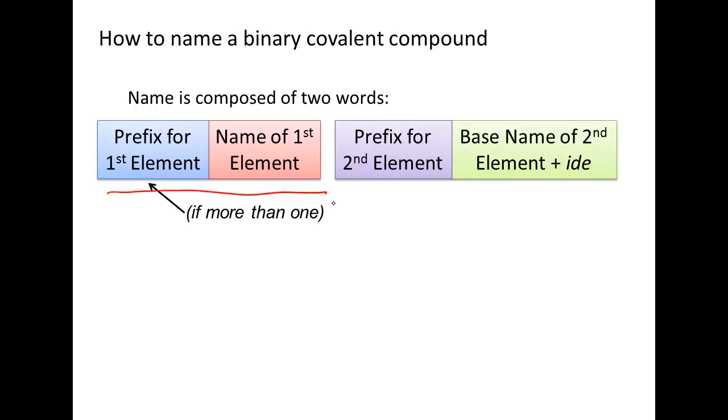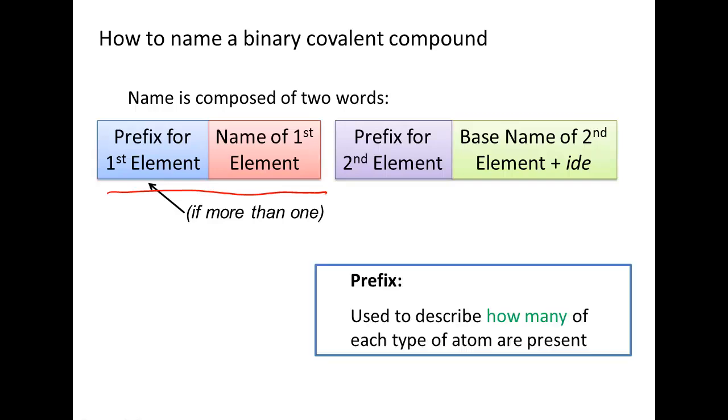So the first name, the first word in your name, comes from the name of your first element. And then there's a prefix that's attached to the front if you have more than one of that element. A prefix is used to describe how many of each type of atom are present. And we're going to get into the specifics of that next.